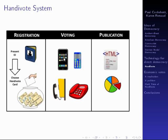Voting itself can be done using either simple Nokia phones, smartphones, or in principle — though we've never tried this — landlines. At the end of the vote, all the results are shown and the votes are all inspectable by the general public to verify that results have been correctly tallied.